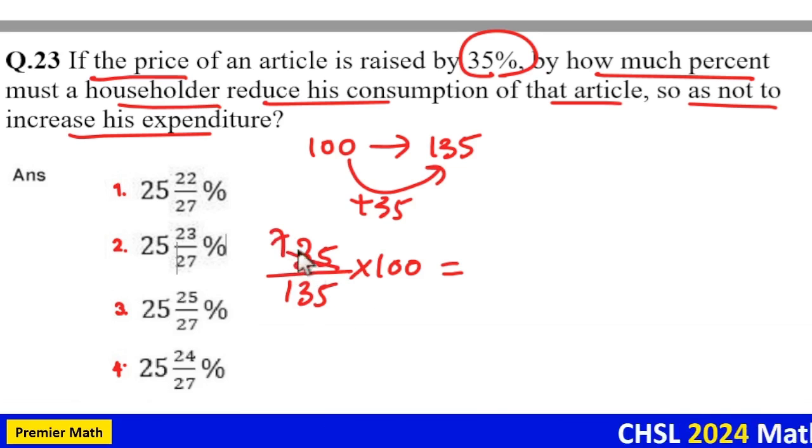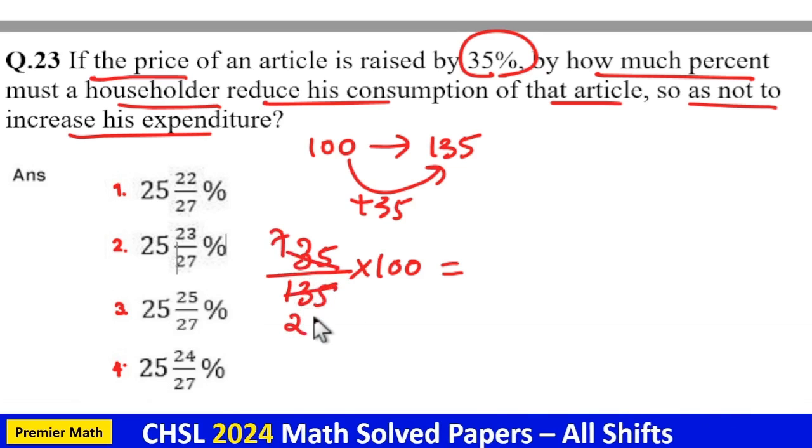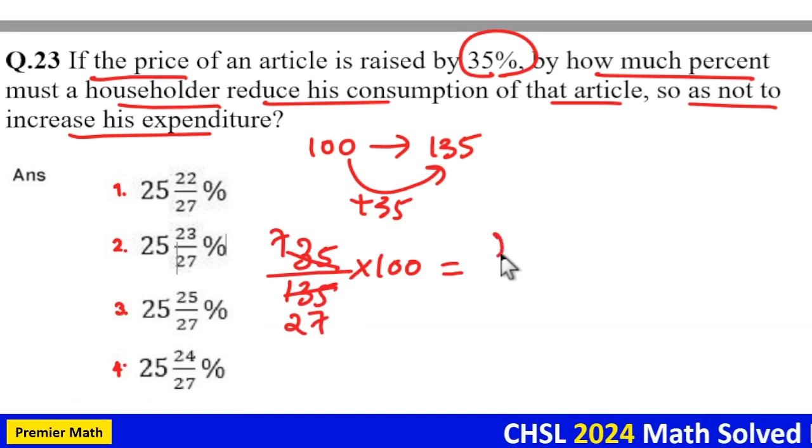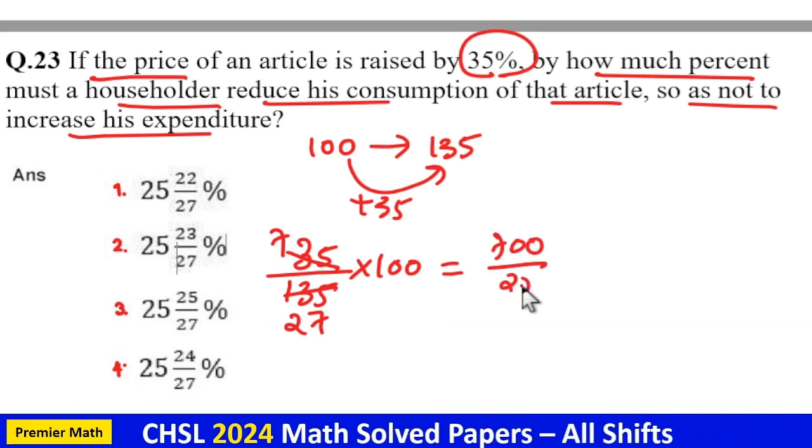Now, 5 goes 7 times in 35, 5 goes 2 times in 13, 5 goes 7 times in 35. So, 700 by 27.